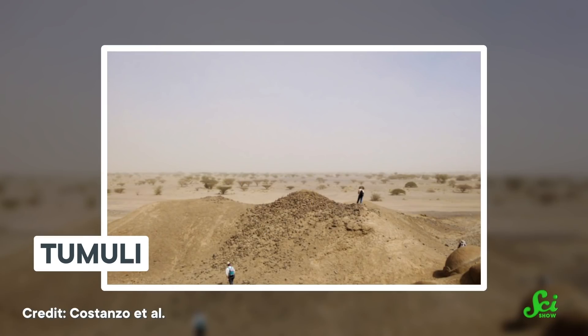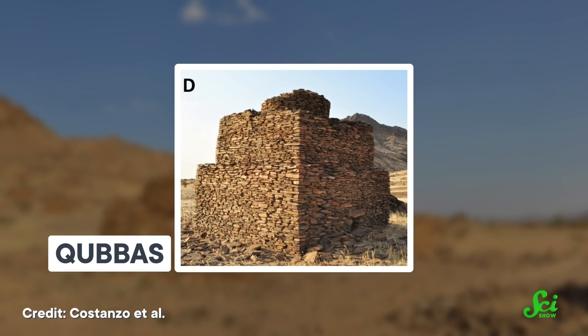There are two main types of tombs in this area. There are tumuli, which are simple raised structures made of earth and stone. And there are kubas, square shrines or tombs constructed with flat slabs of metamorphic rock.